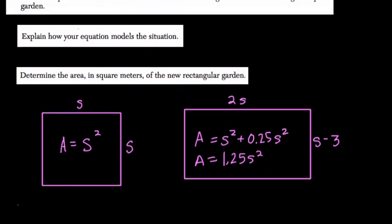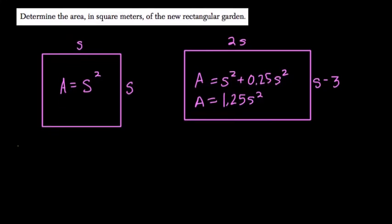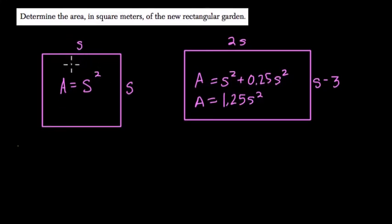And here, we want us to write an equation that could be used to determine the length of the side of the original square garden. So they want us to write an equation that can help us solve for S. So here, we could write S times S equals S squared, but it doesn't allow us to solve for anything.